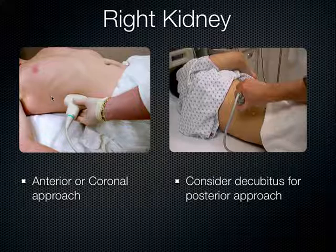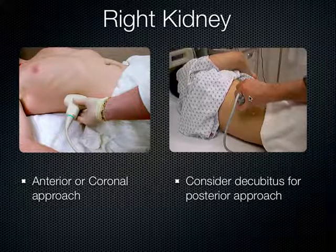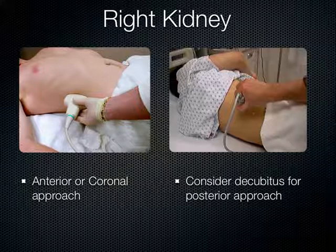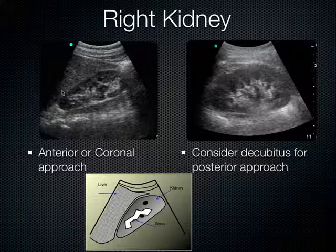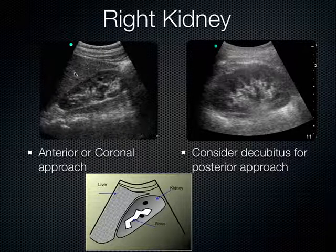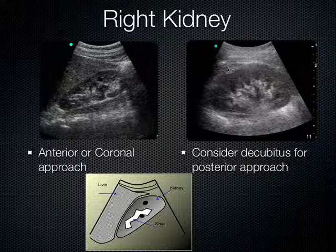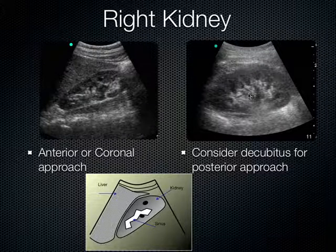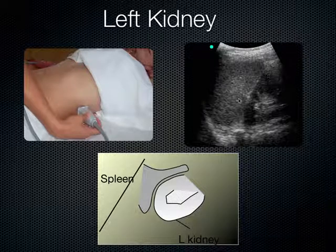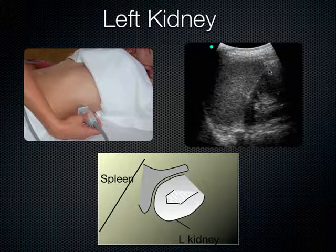For kidney scanning, you can use an anterior approach, a coronal approach with the indicator towards the patient's head, or a posterior approach with the patient in decubitus position going between the ribs. Going between the ribs, a smaller footprint phased array transducer helps rather than the large curved array. The right kidney is easier due to the large liver window. For the left kidney, since the spleen is smaller, you may lose the lower pole and need to drop a rib level or go more posterior.